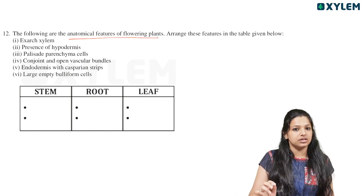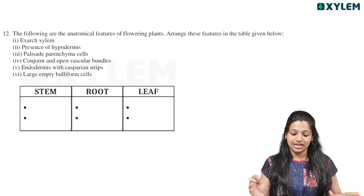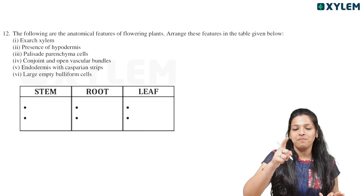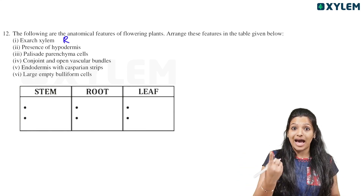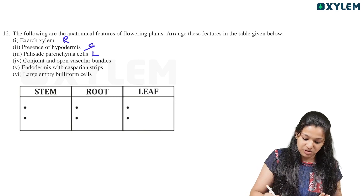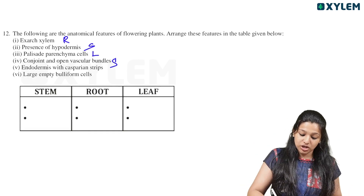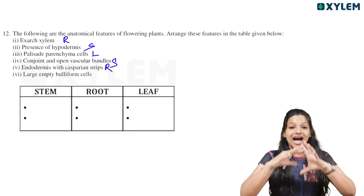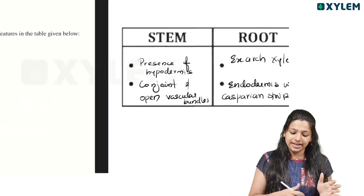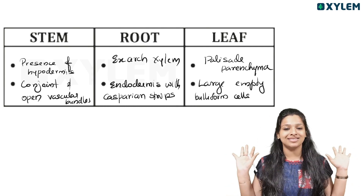Following are anatomical features of flowering plants — arrange these features in the table for stem, root, and leaf. Exarch xylem belongs to root. Hypodermis belongs to stem. Palisade parenchyma and spongy parenchyma belong to leaf. Conjoint open vascular bundle belongs to stem. Endodermis with Casparian strips belongs to dicot root. Large empty colorless cells belong to leaf. Matching the table correctly earns three marks.